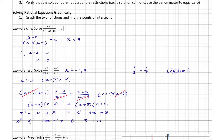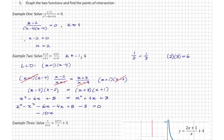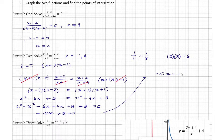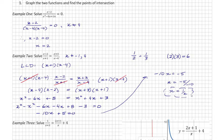The x squared terms cancel, negative 6x minus 4x equals negative 10x, and 8 minus 3 gives positive 5, so negative 10x plus 5 equals zero. Then negative 10x equals negative 5, so x equals negative 5 over negative 10, which is 1 over 2. Checking this against the restrictions — it is not part of them — so x equals one half is the final answer.